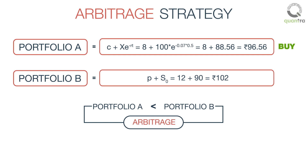We buy the cheaper portfolio and sell the expensive one to make a risk-free profit of Rs.5.44, that is Rs.102 minus Rs.96.56.